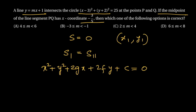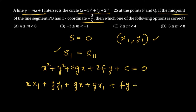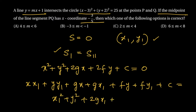T = S₁₁ is: x·x₁ + y·y₁ + g(x + x₁) + f(y + y₁) + c = x₁² + y₁² + 2gx₁ + 2fy₁ + c.